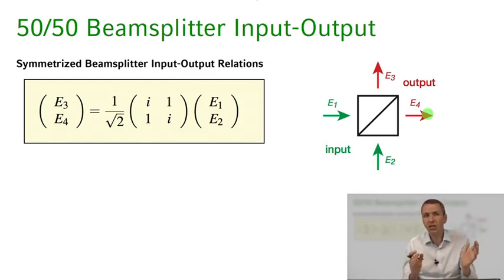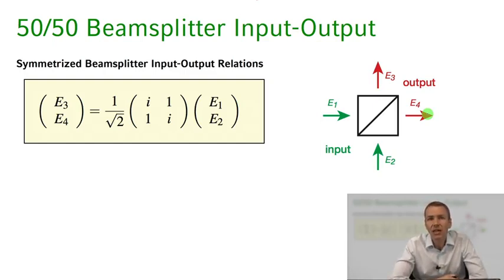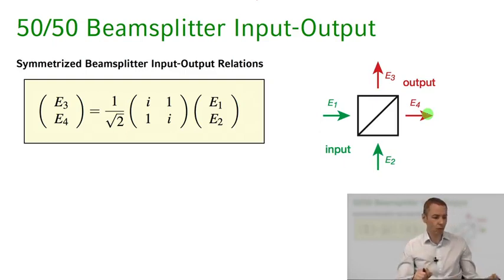In the classical case, light is always equally split into two parts of equal intensity at ports 3 and 4. In the quantum case, however, we can achieve a result completely incompatible with this classical result. That's all for the classical beam splitter — in the next class we'll discuss the quantum case. Thanks for watching, see you next time.